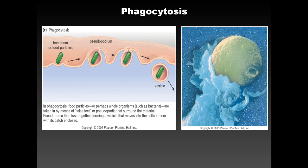Phagocytosis is cellular eating. It happens in your intestines and also in amoebas. It's the cell bringing in food particles — sometimes whole organisms — using pseudopodia. The pseudopodia surround the target and then invaginate it into a vesicle.